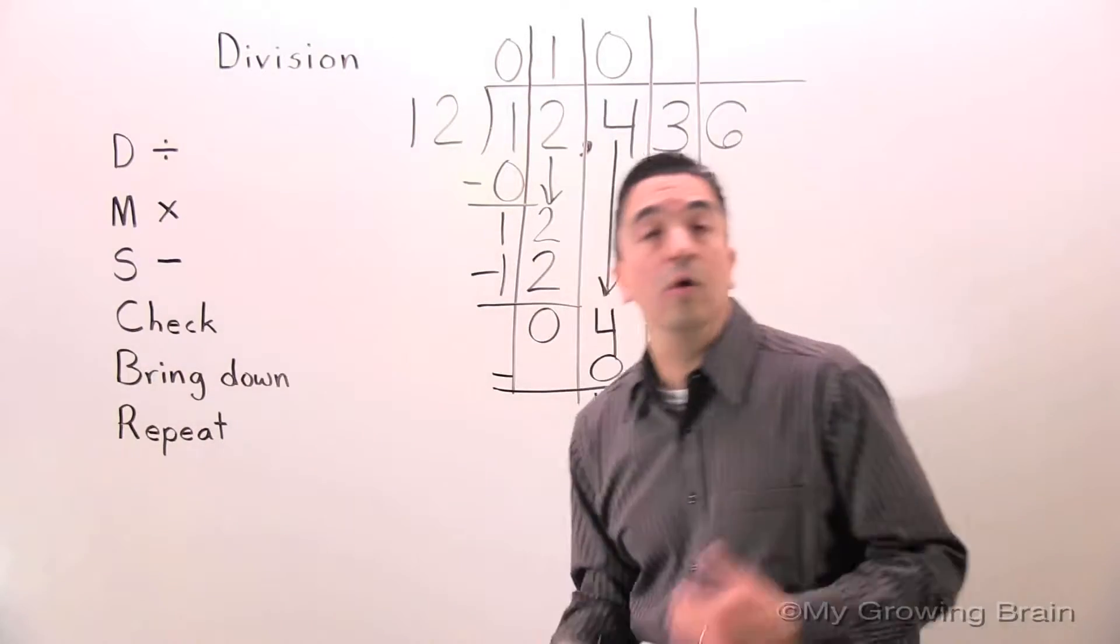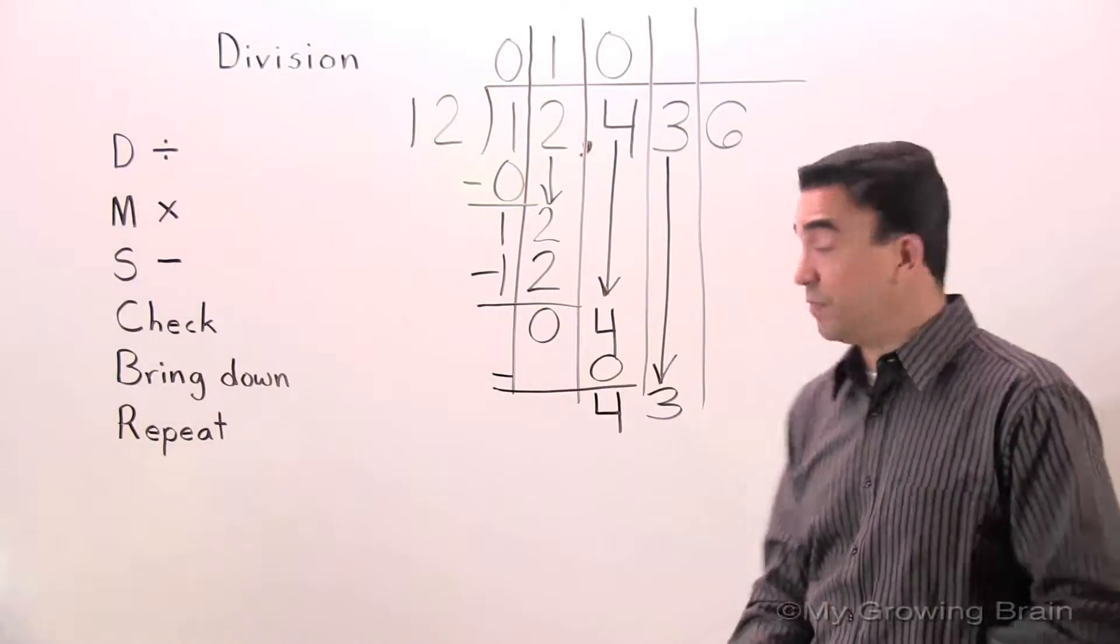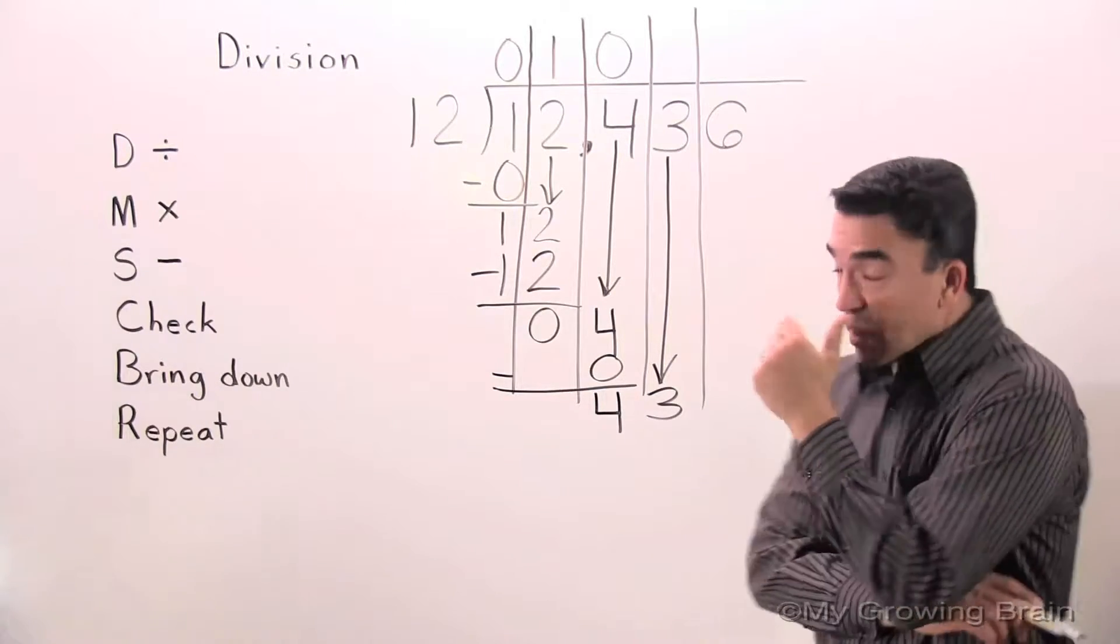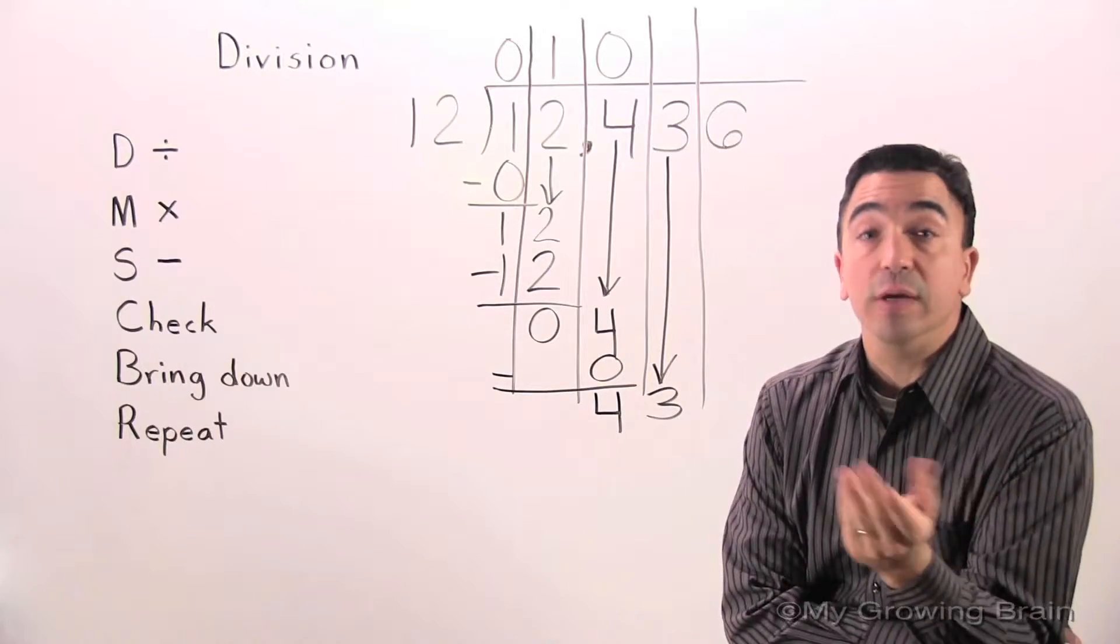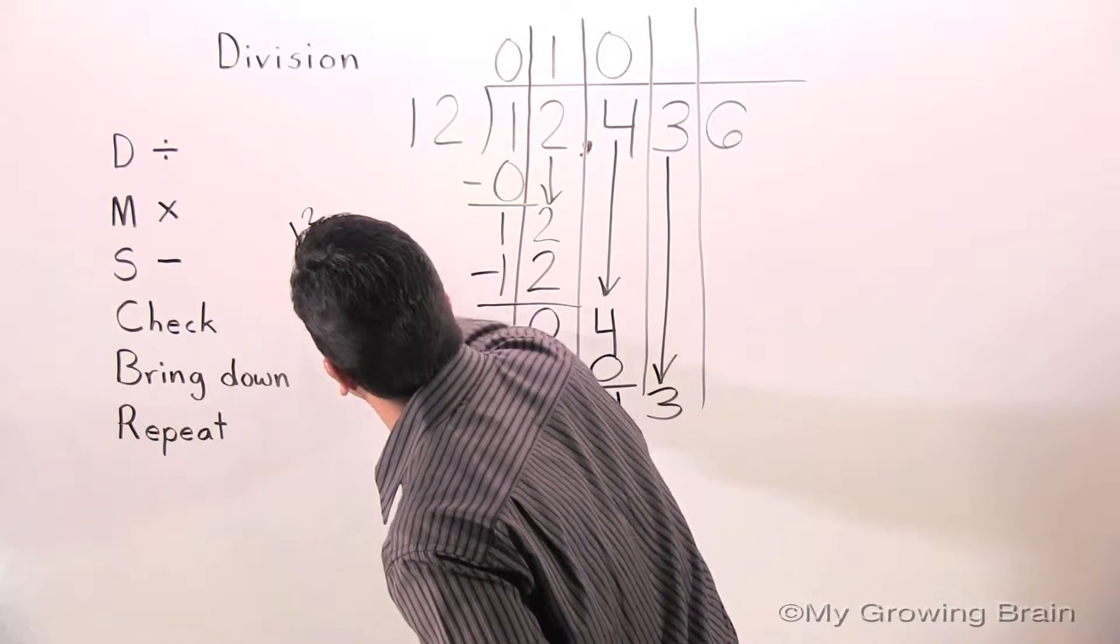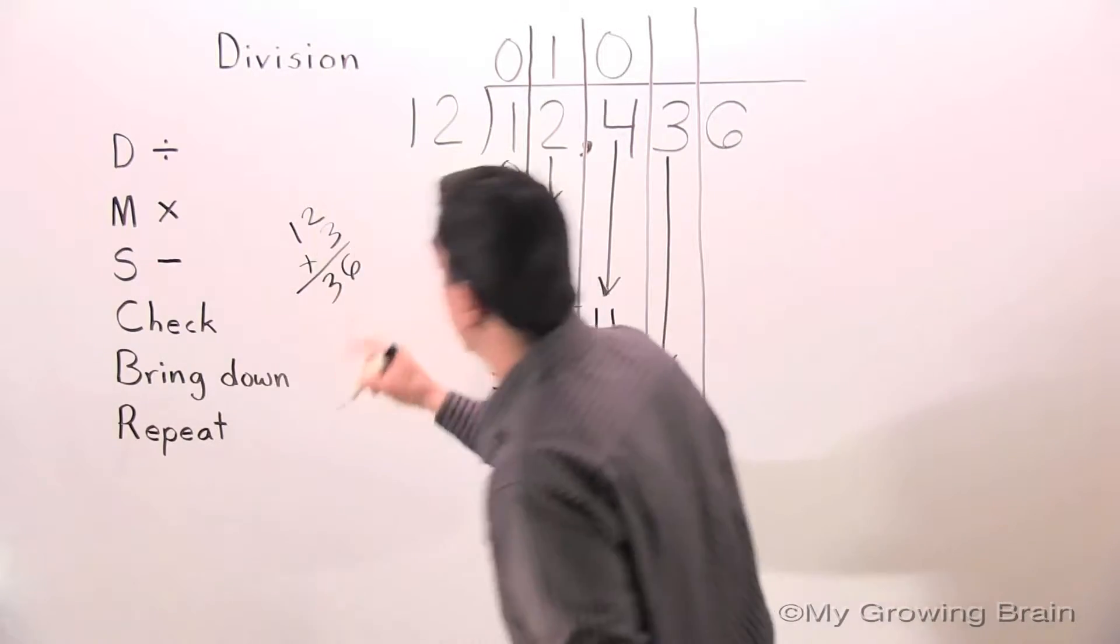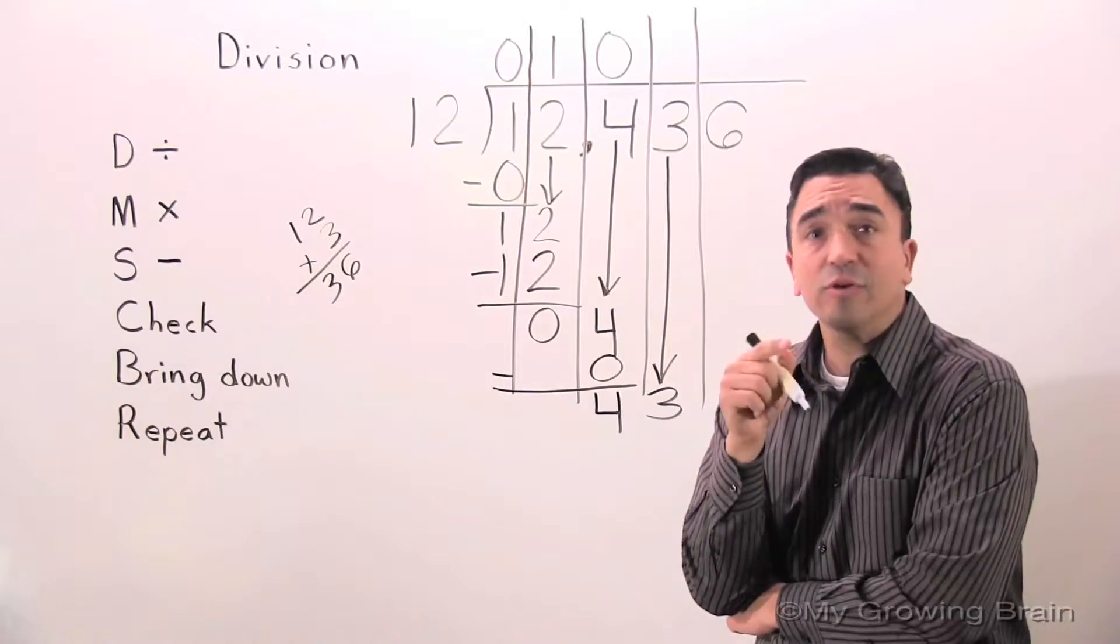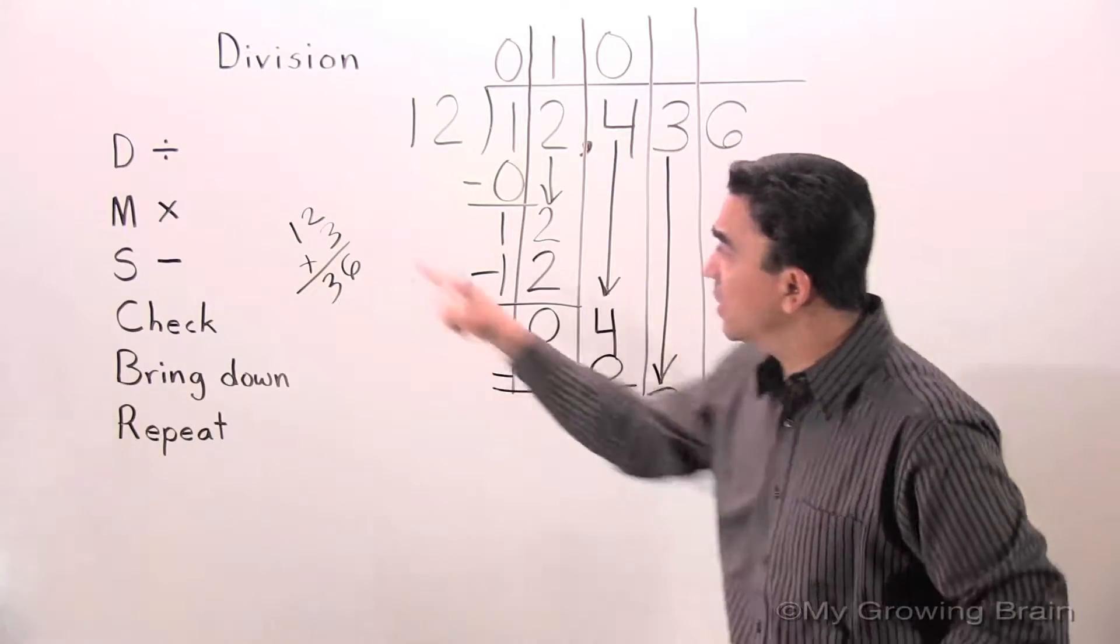Next step: repeat. Repeat the whole process. Go back to the top. Divide. 43 divided by 12. Hmm. I know 12 times 2 is 24. I'm going to try 12 times 3. Remember, experiment. 3 times 2 is 6. 3 times 1 is 3. 36? It's close to 43, right? Yeah. I'm going to try that. Okay, let's see. 12 goes into 43 three times.